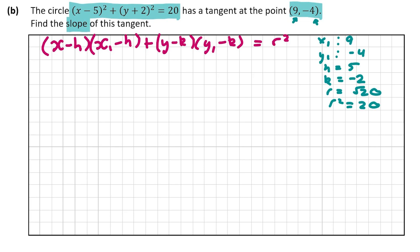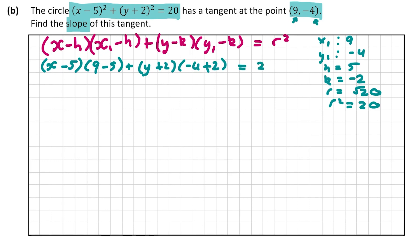Let's fill out the tangent equation. We have (x minus h), so (x minus 5), multiplied by (x1 minus h), so (9 minus 5), plus (y minus k), so (y plus 2), multiplied by (y1 minus k), so (minus 4 minus minus 2), which is (minus 4 plus 2), equals r squared which is 20.